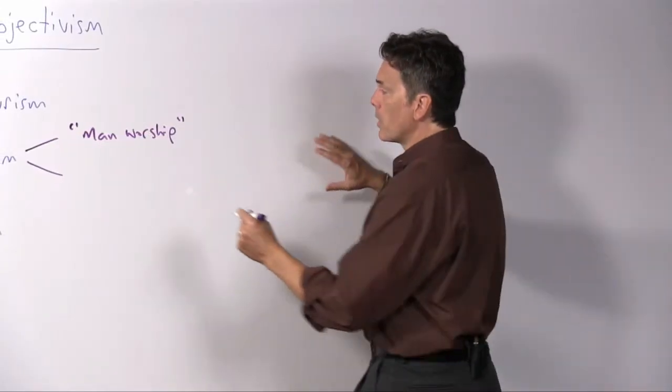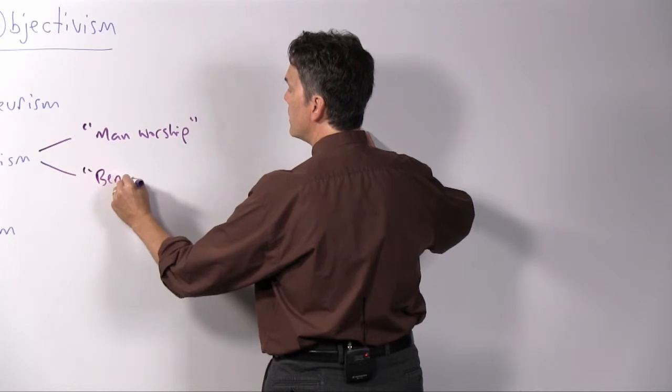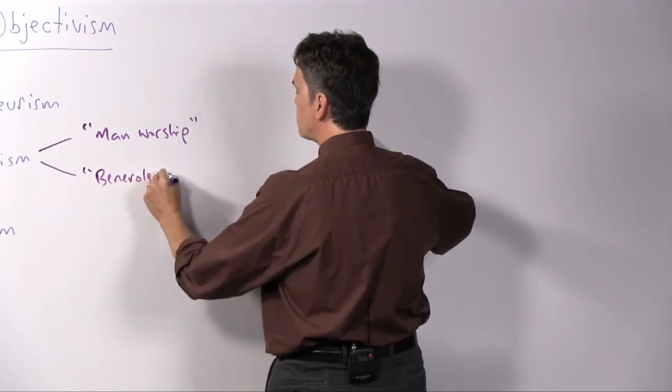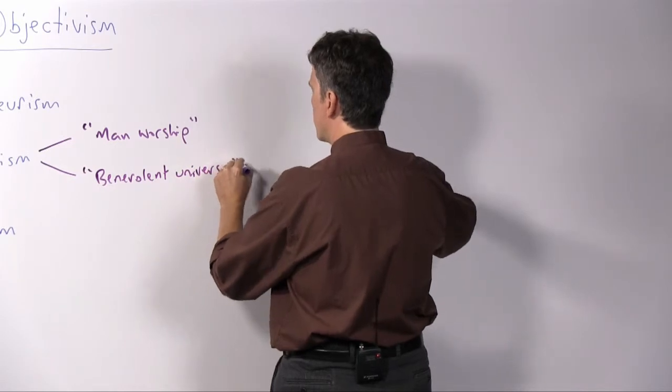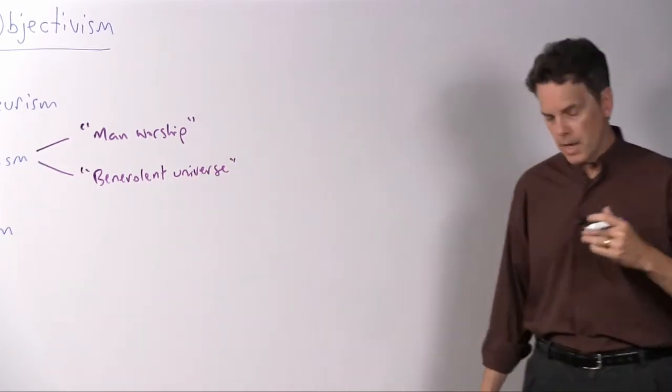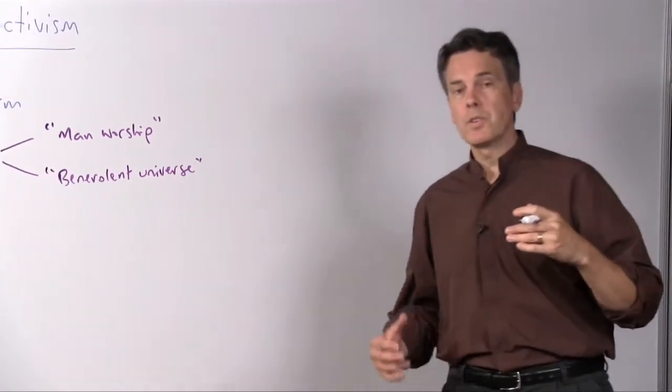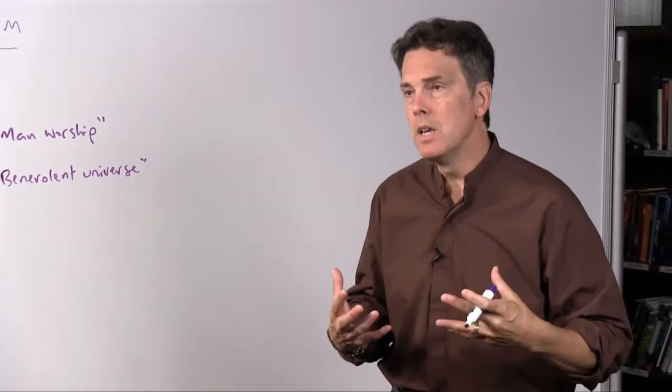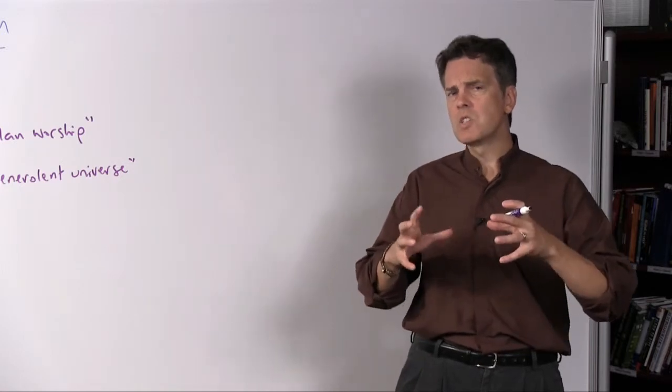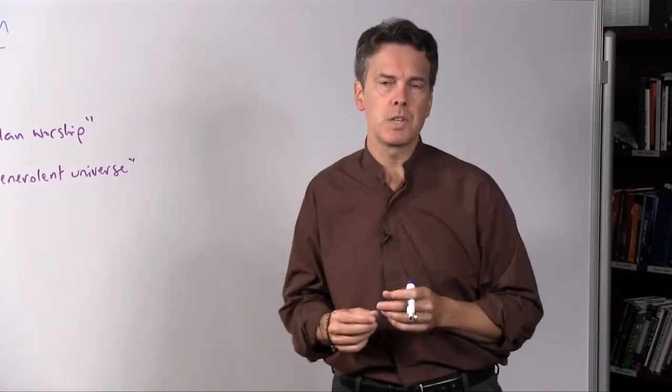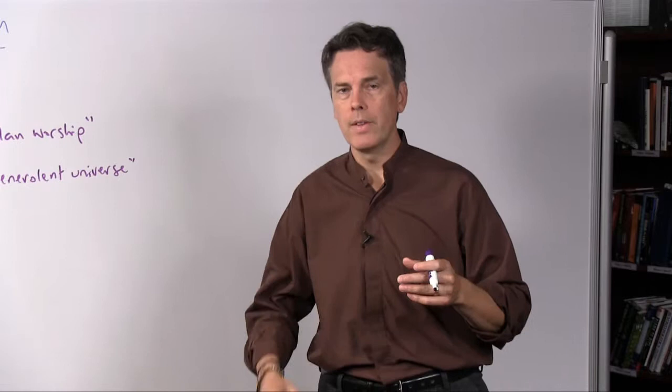Now, the other important concept here is what Rand calls the benevolent universe premise. And this is a slightly metaphorical formulation. The idea here is that the universe, or the world or reality, is open to human achievement. Not necessarily that the universe is explicitly on our side, the universe doesn't take sides, it's indifferent in that sense.